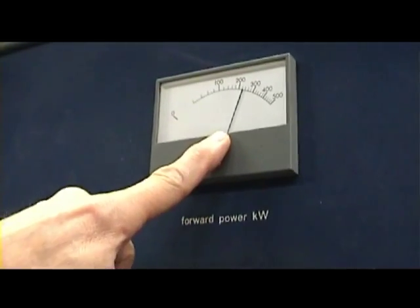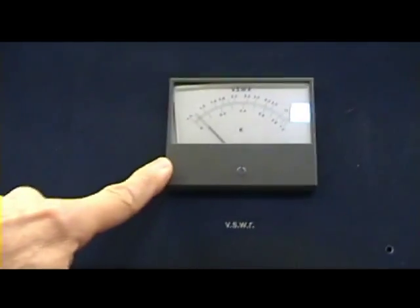Forward power, 250kW. BSWR about 1.09. Backward power, not a lot. So that's a good sign. Most things are working. We've got modulation running.